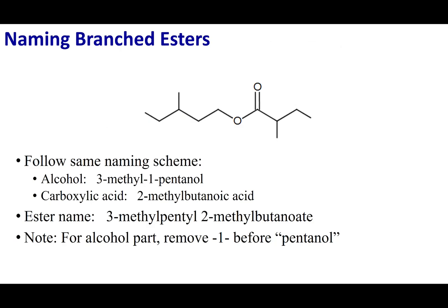If there are branches on your ester, those branches came from the acid and alcohol used to construct it, and they carry over when naming. After making the cleavage, the acid portion had a methyl on the second position. On the alcohol side, there was a methyl on the third position. Make sure you carry those over when putting the name together. One thing to note: you can remove the designation of where the alcohol's OH resides, because the alcohol no longer exists since it has been esterified. So the '1' designating the alcohol position on pentanol is removed.